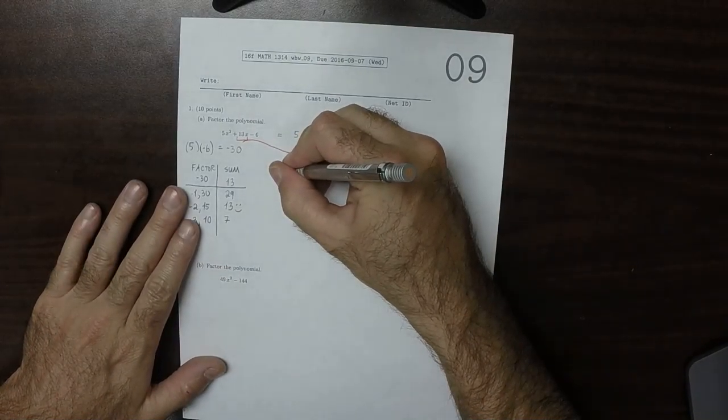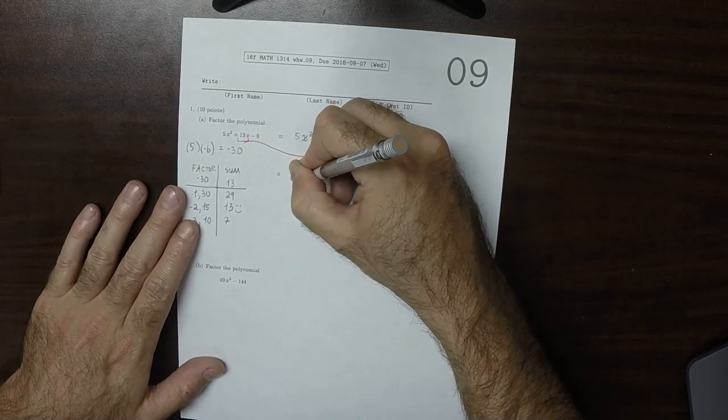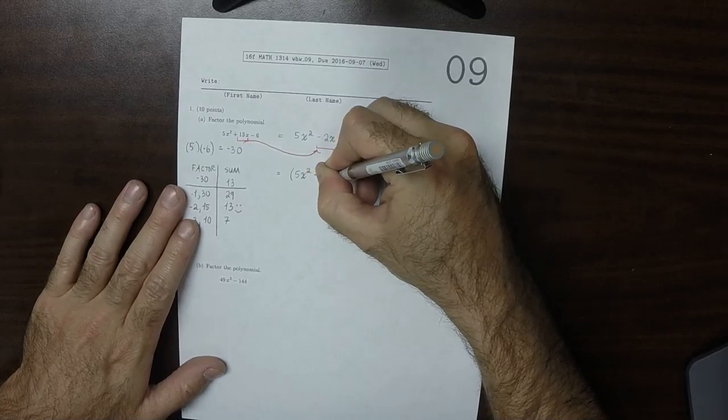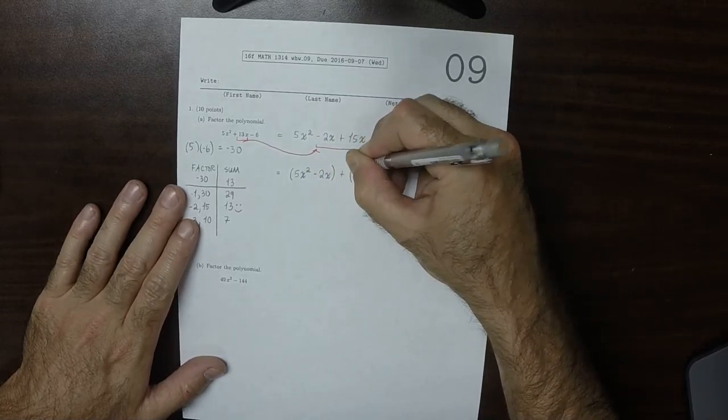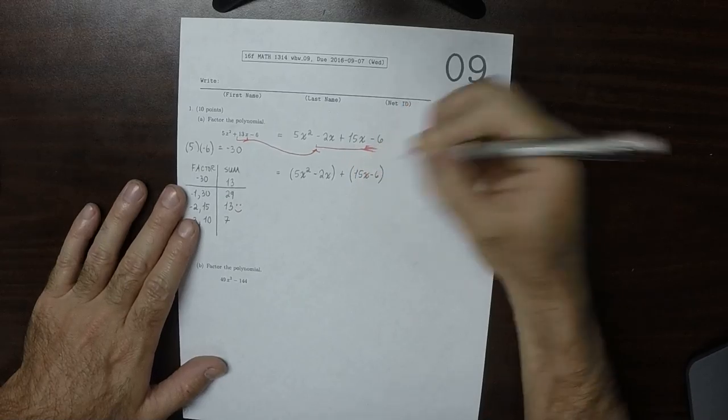Because now we're going to take these in form groups. So 5x squared minus 2x is now a group, and then plus 15x minus 6, and that's a group.